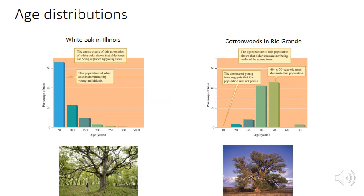To illustrate why studying age distributions can be enlightening, consider this comparison of two studies of tree populations. By understanding how tree diameter relates to tree age, researchers could measure many trees in a population, estimate their ages, and look at the age distribution. The graph on the left is a study of white oaks in forests in Illinois, and the graph on the right is a study of cottonwoods in the Rio Grande in New Mexico.